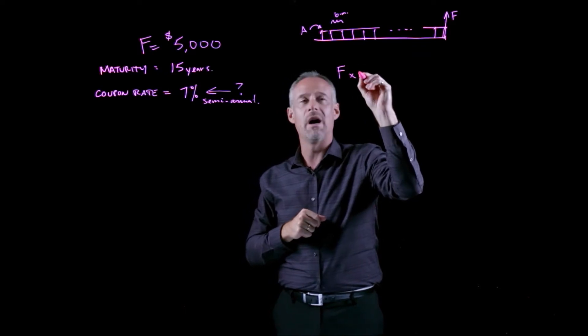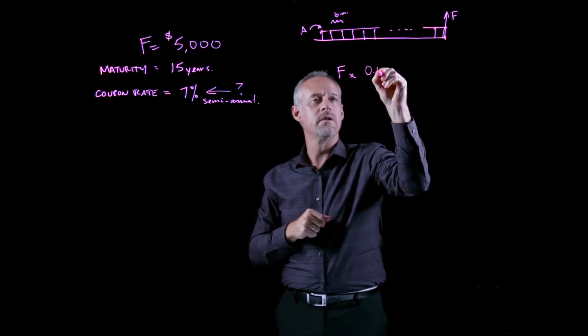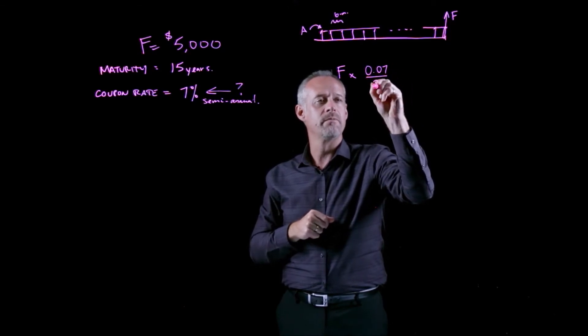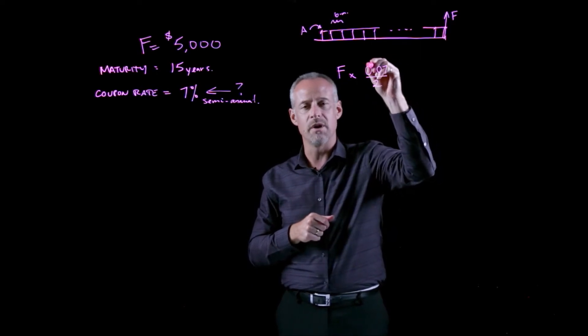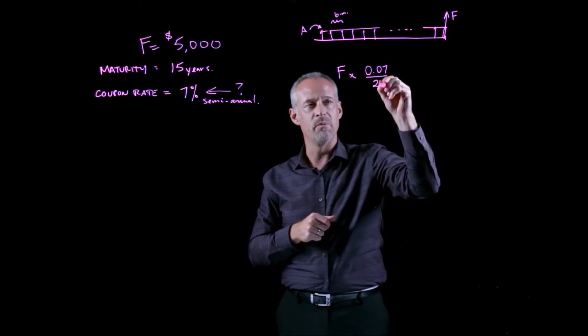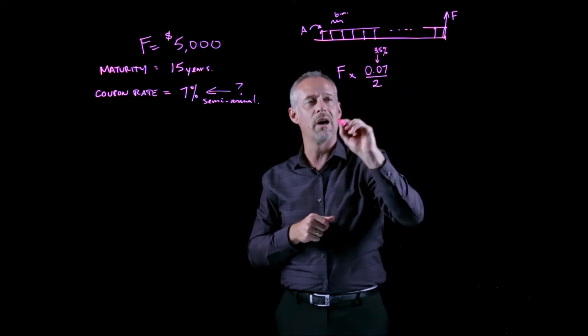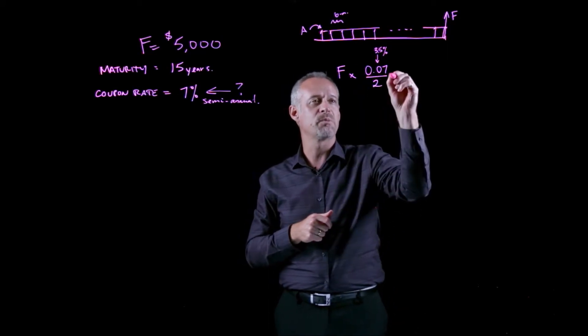The way that we calculate the amount of the annuity is we take the face value of the bond and multiply by the coupon rate. In this case, it's 7% and we divide by two because this is like our nominal interest rate. This is our number of compounding periods.